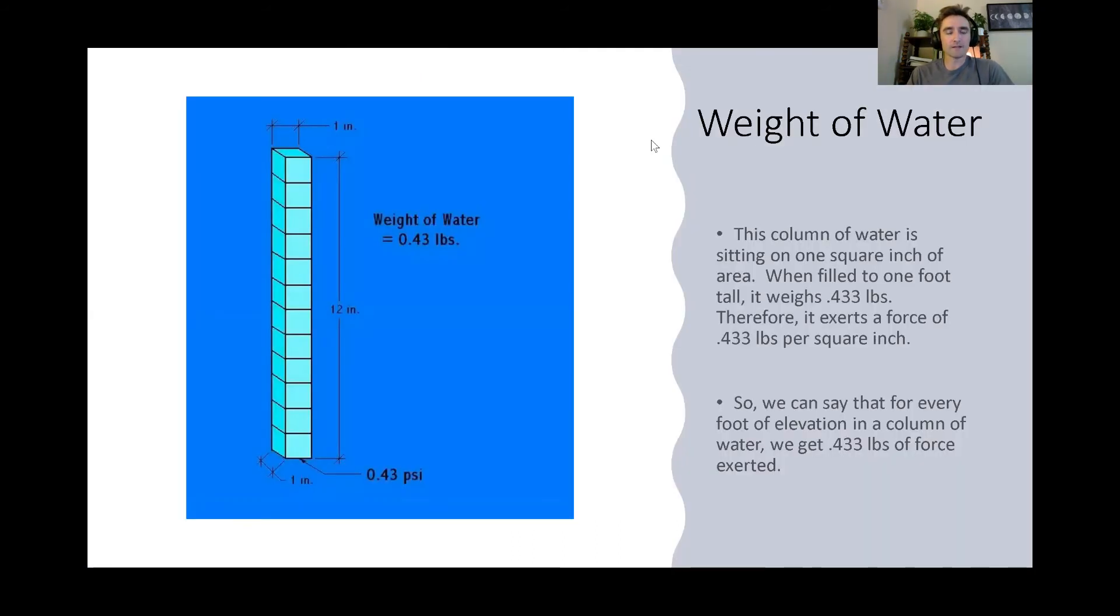Here's a graphic that is representing the concept of psi. So imagine each of these cubes is one cubic inch. You stack them on top of each other so there are 12. So it's one foot tall, 12 inches tall, and the bottom is one square inch. What you end up with at the bottom is a weight. Like if that could be on a scale, it would be 0.43 pounds. And that is how we define water pressure. So for every foot of elevation in a column of water, we get 0.433 pounds of force exerted per square inch.